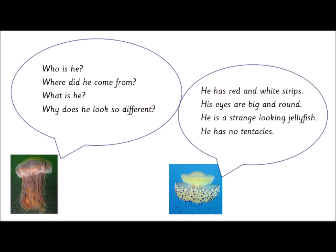Here are some questions I thought of — I bet you came up with some too: 'Who is he? Where did he come from? What is he? Why does he look so different?' The first jellyfish is asking his friend because he wants to know what his friend thinks, and each question ends with a question mark. The next jellyfish is saying statements, just telling us what he can see: 'He has red and white stripes. His eyes are big and round. He is a strange looking jellyfish. He has no tentacles.' Those are the statements.